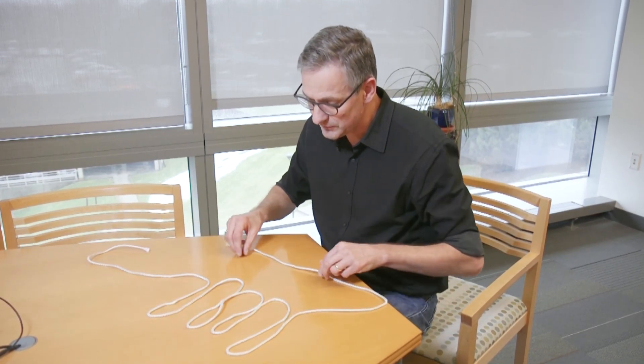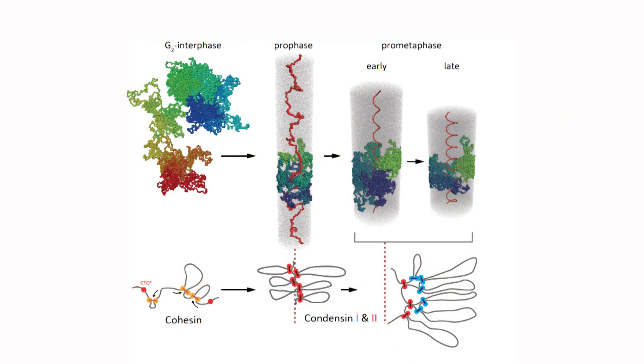So now you have a series of loops, and the chromosome gets shorter and shorter. As it does that, these loops get really, really big at some point, and it makes the chromosome short but way too wide.